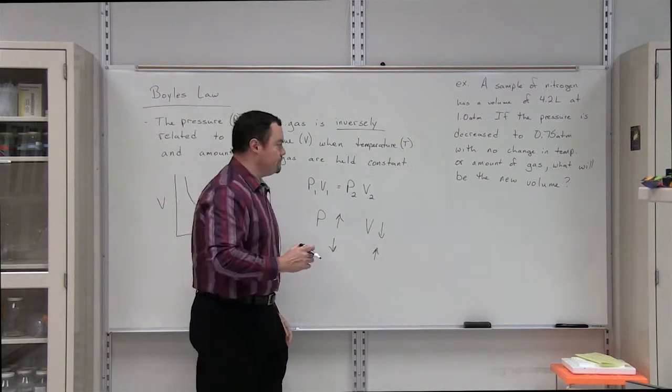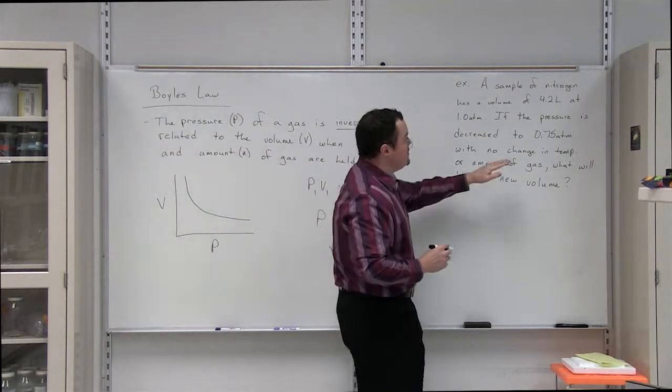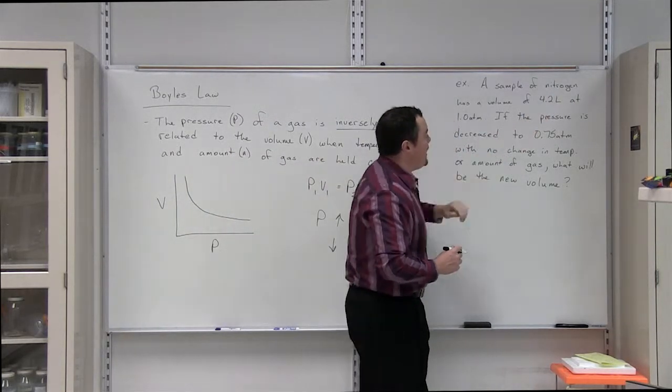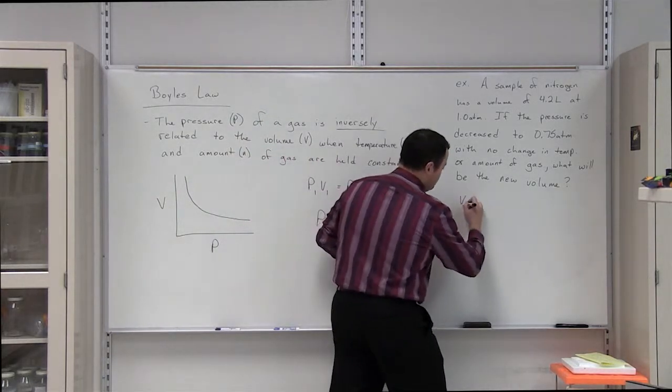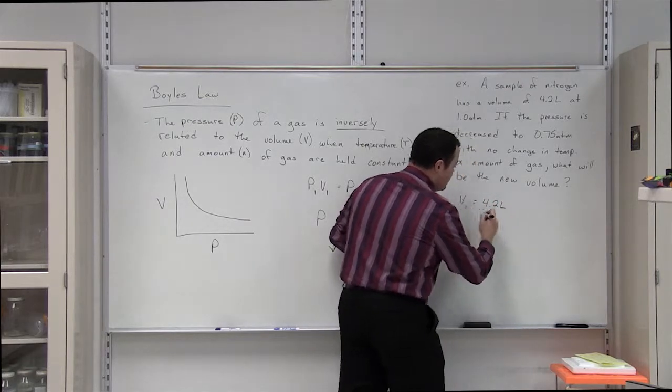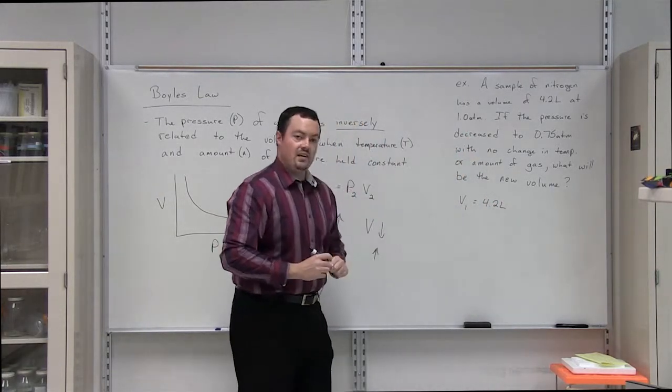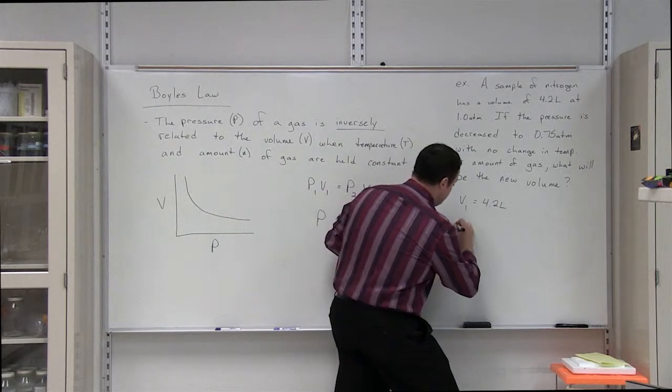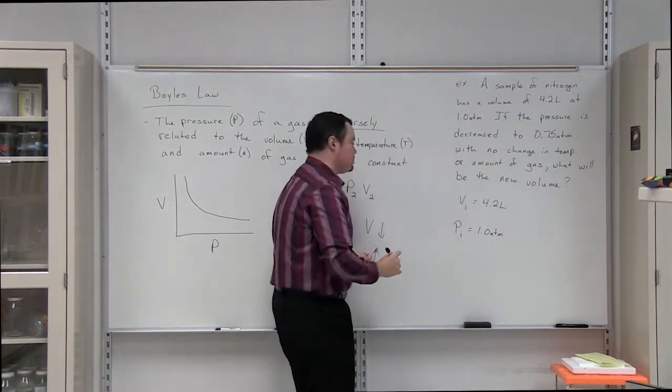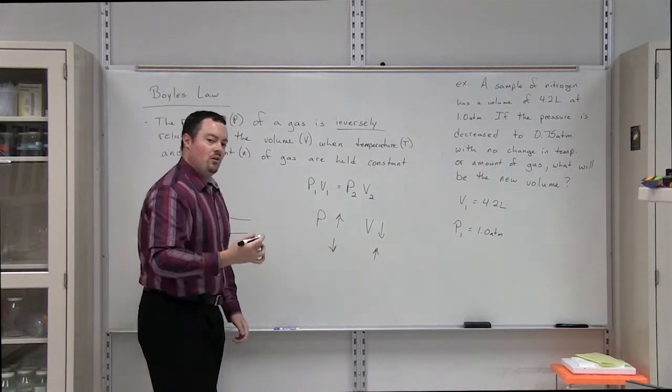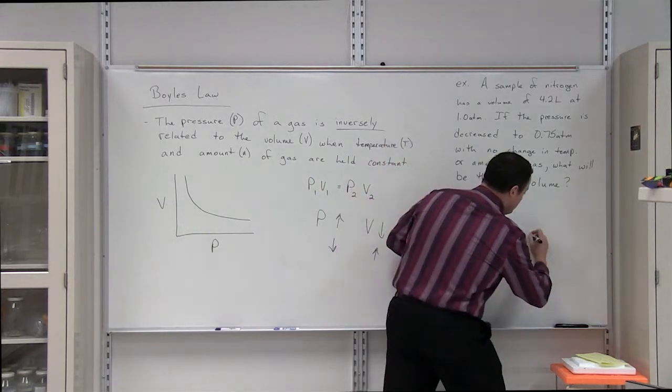Let's see if that holds true. So, let's determine what variables the problem gives us. It tells us that this gas under condition one has a volume of 4.2 liters. It also tells us that the pressure of this gas at condition one is one atmosphere. And then it tells us we're going to decrease the pressure to 0.75 atmospheres, so that's going to be our P2.